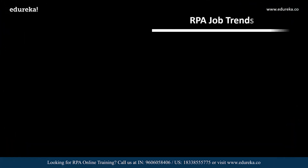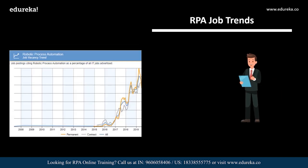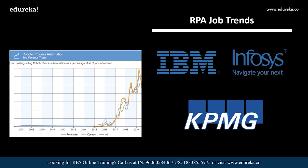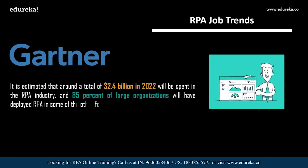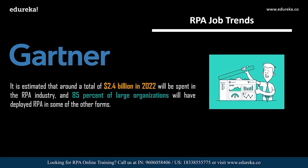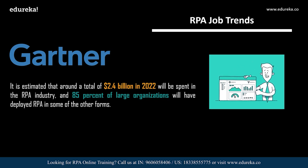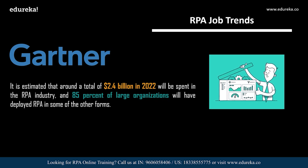As you can see on my screen, the number of RPA developer jobs in the United Kingdom is increasing on a large scale. RPA developer career opportunities will only shoot through the roof, with companies such as IBM, Infosys, and KPMG offering lucrative salaries. According to Gartner, around 2.4 billion US dollars is estimated to be spent in the field of RPA by 2022, and 85% of large organizations will have deployed RPA in some form.